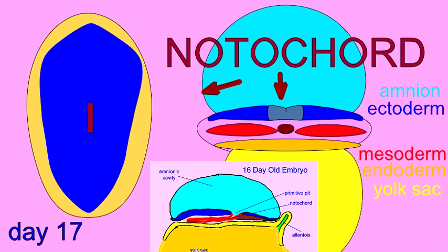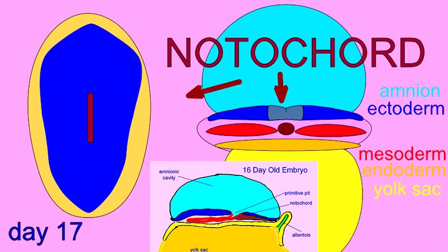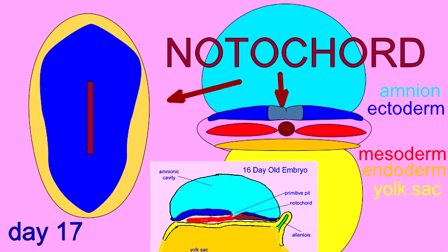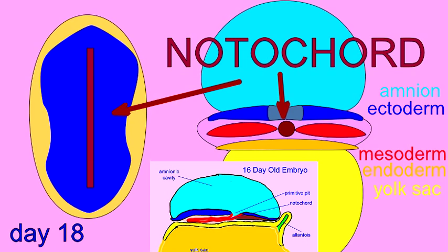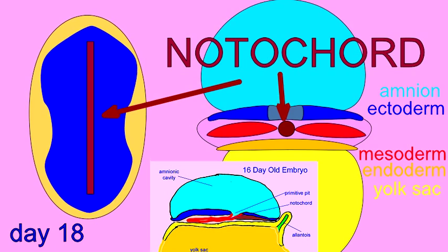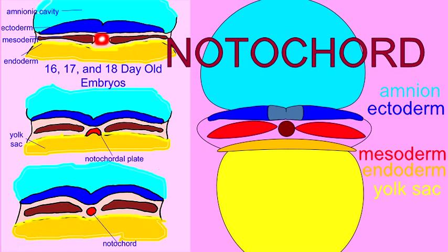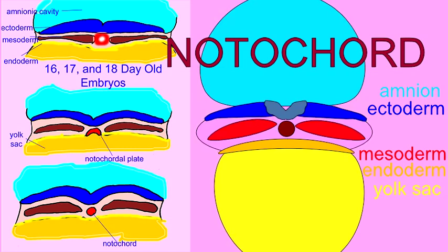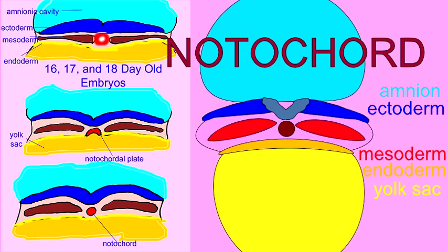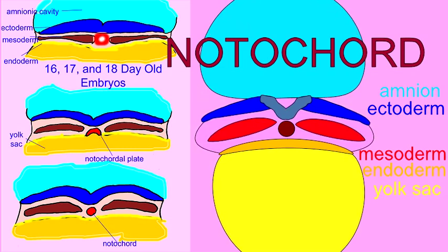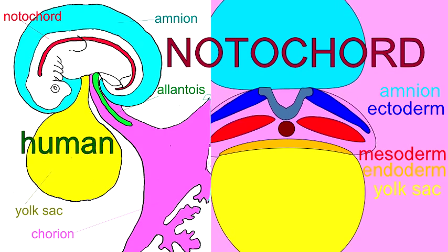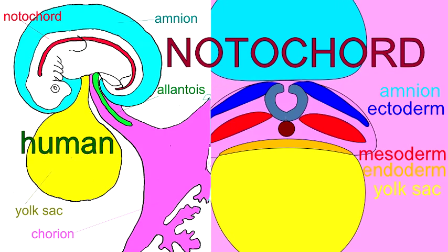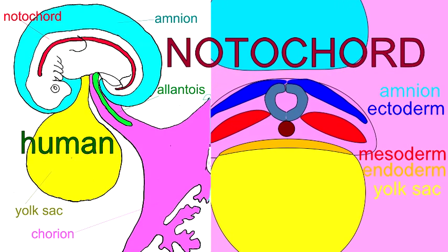After mesoderm forms in gastrulation, a notochord begins to form, which is completed by the beginning of the fourth week around days 22 through 24. The notochord is a long cylinder along the longitudinal axis of the body from head to tail.